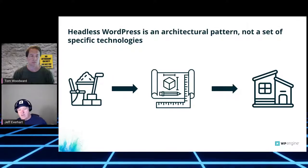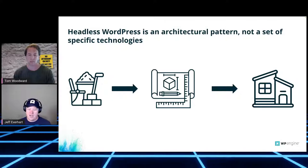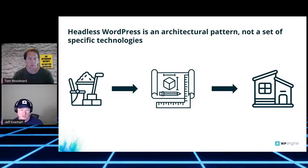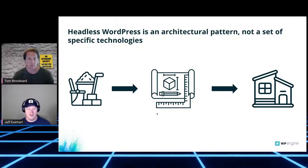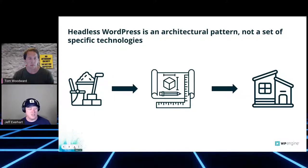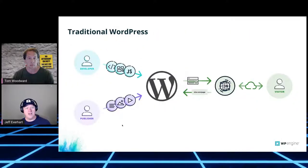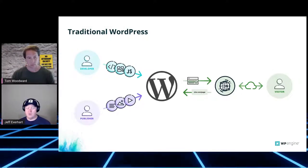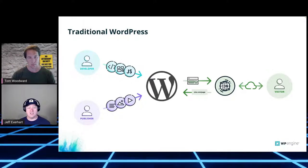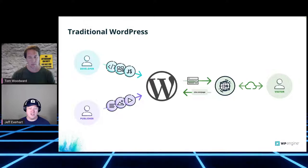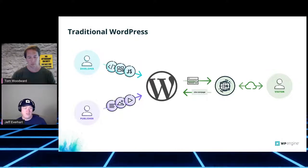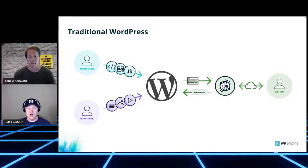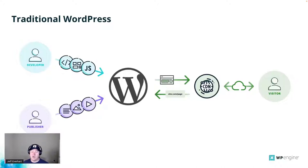We can have our Spanish style stucco Mediterranean tile villas, and then we can also have our log cabins up in the Swiss mountains. There's enough room in this area of development to satisfy all those purposes. What we'll do now is look at this architectural diagram. This describes what the interaction between traditional WordPress looks like for the visitor, the developer, and the person publishing content.